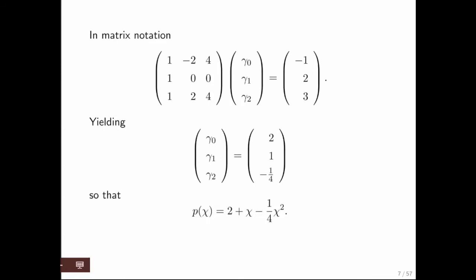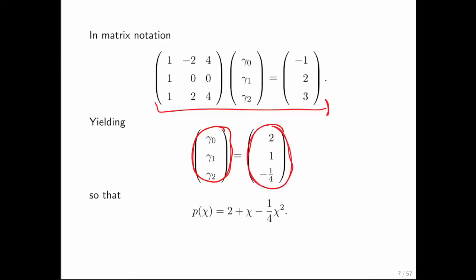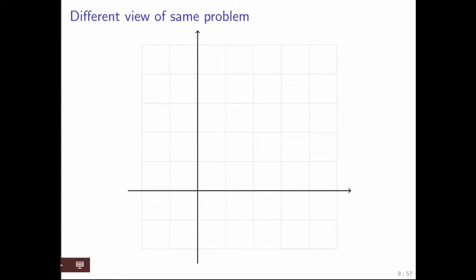If we set this up in matrix notation, then we can apply the techniques we saw before — say Gaussian elimination, or we could factor it as an LU factorization and then solve it. With this, we can determine what the coefficients are. The answer happens to be this right here, and I trust that by now you know how to do that. So the second-degree polynomial that interpolates is the polynomial 2 plus chi minus one-quarter chi squared.